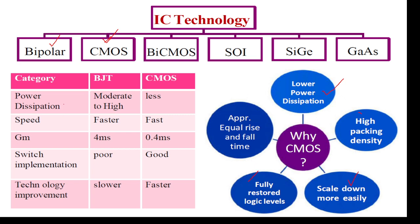You can see here that power dissipation is moderate or high in bipolar technology, but in CMOS it is very less compared to bipolar technology — power consumption and power dissipation is very less in CMOS, complementary metal oxide semiconductor. Speed is also fast; both are fast, but the gain margin is 4 milliseconds in bipolar versus 0.4 milliseconds in CMOS.